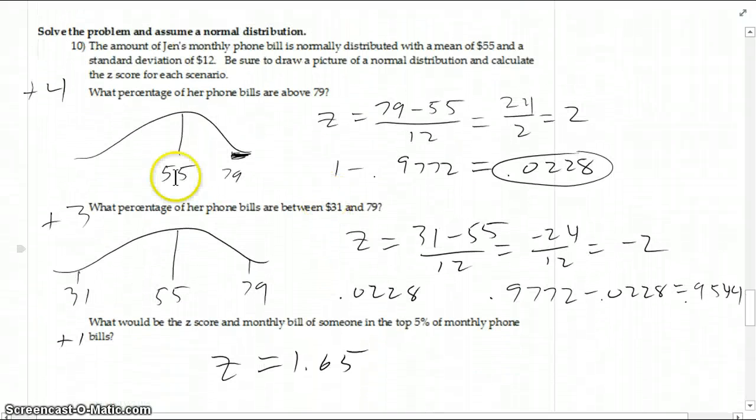At number 10, we've got a similar situation. Phone bills. Draw the distribution. 55 is average. What's the probability that somebody is above 79? So we find the z-score. It's two standard deviations above normal. If you look up 2 on the z-table, you get .9772. And the area to the right would be the whole thing, 1 minus .9772. So it's about a .0228 or 2.28% chance of being above $79 for the month.